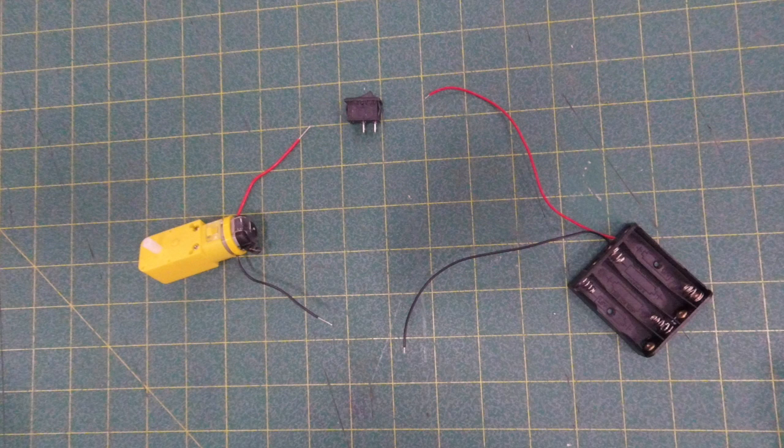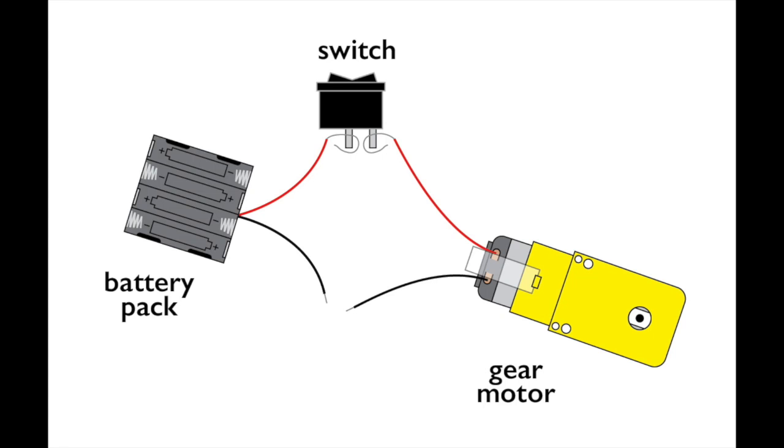This is what your basic circuit is going to look like. You're going to have a gear motor attached to the battery pack, attached to the switch. And this is where you are actually going to be applying solder.